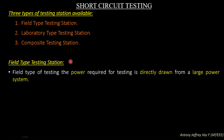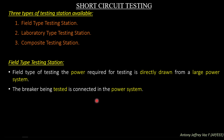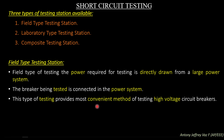In a field type testing station, the power required for testing is directly drawn from a large power system. So while testing a circuit breaker, the power to test it is drawn from an actual power system. The breaker being tested is connected in the power system and the test is carried out in a real situation. This type of testing provides the most convenient method of testing high voltage circuit breakers.